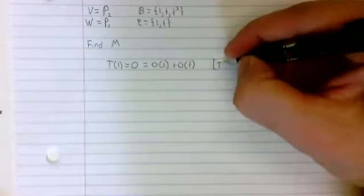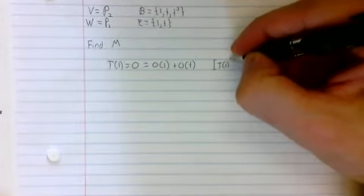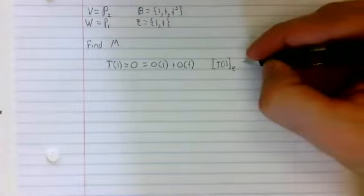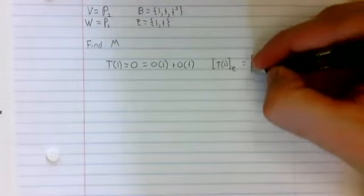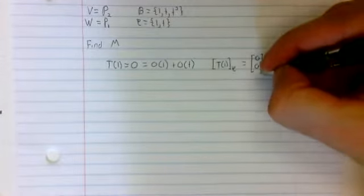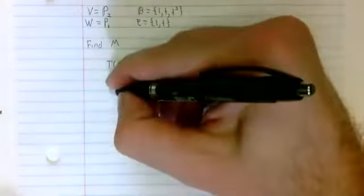t squared is not in the basis. We'll then represent t of 1 in terms of c, and get 0, 0.